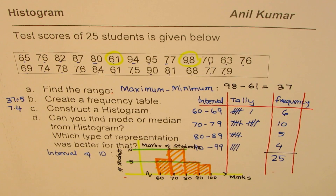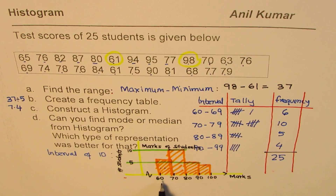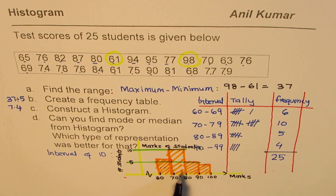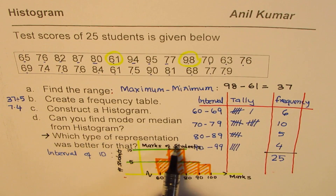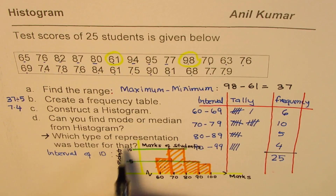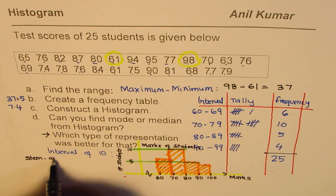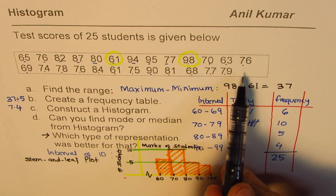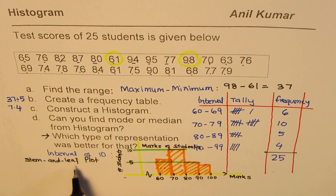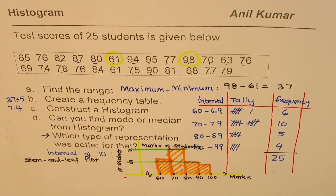The histogram gives you a visual overview — for example, all students scored between 60 and 100, and most scored between 70 and 80. That is the advantage of a histogram: it is easy to read visually. The disadvantage is that you cannot calculate mean, mode, or median from it. For those calculations, the stem and leaf plot is better. Whenever you want to analyze data and find mean, mode, and median, use a stem and leaf plot rather than a histogram.